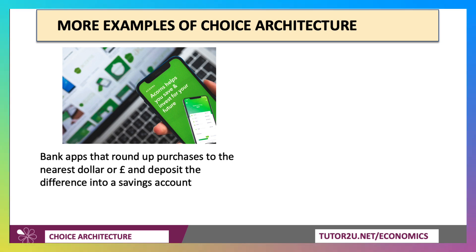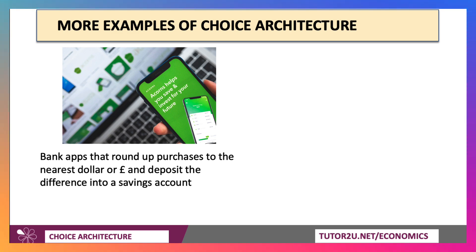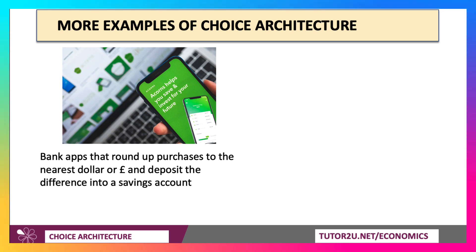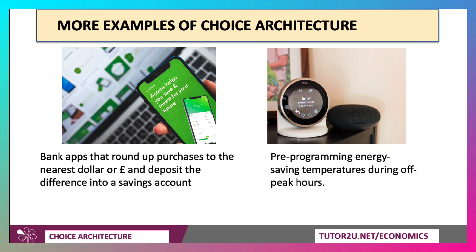Thinking about financial economics and trying to encourage people to save more — impulse saving, if you like, instead of impulse spending. Bank apps like the Acorns app round up purchases to the nearest dollar or pound and deposit the difference into a savings account. So when you spend £75 on something, it automatically adds £5 to a dedicated high interest savings account. In terms of energy conservation, things like pre-programming energy-saving temperatures during off-peak hours — the Nest smart meter is a good example.